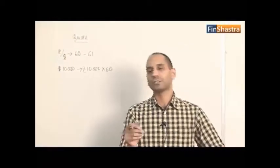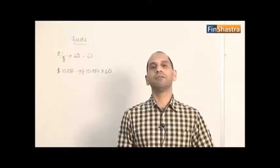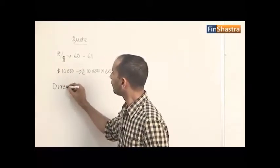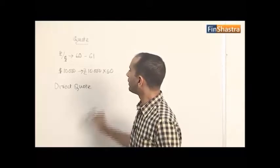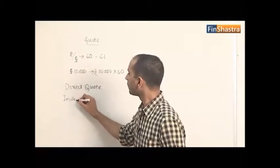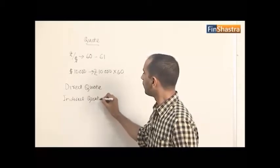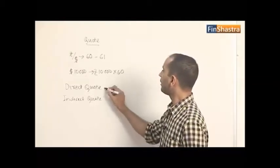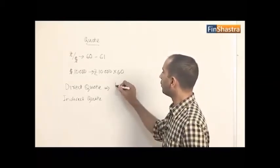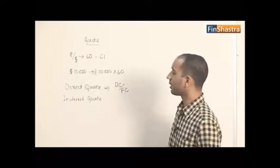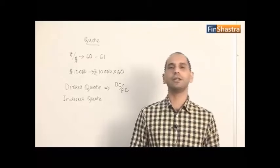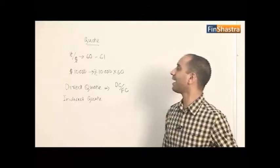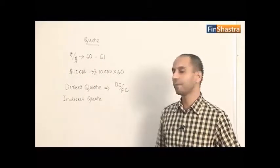There are two types of quotes that prevail in the foreign currency market: the direct quote and the indirect quote. A direct quote is when I give a quote based on domestic currency divided by foreign currency. Domestic currency for us is the Indian rupee; foreign currency is the US dollar. So when I give a quote like rupees 60 per dollar, that's a direct quote.